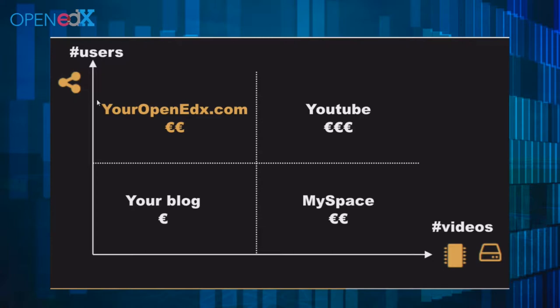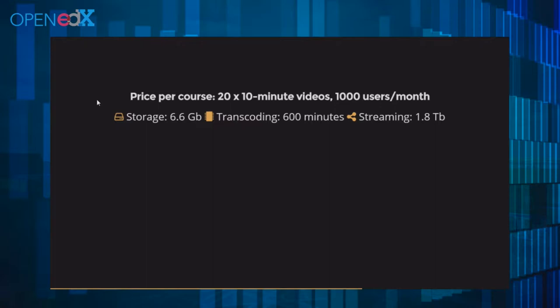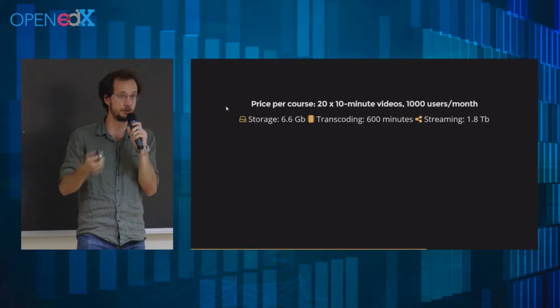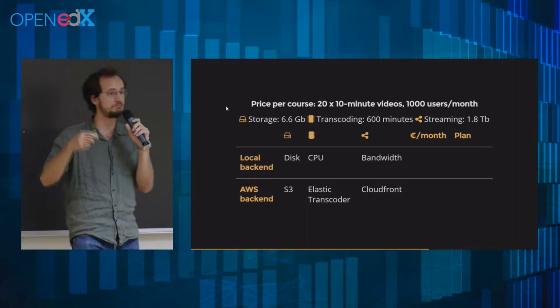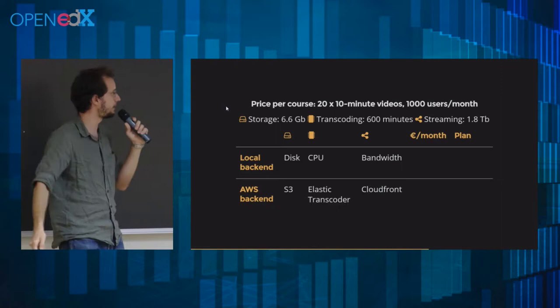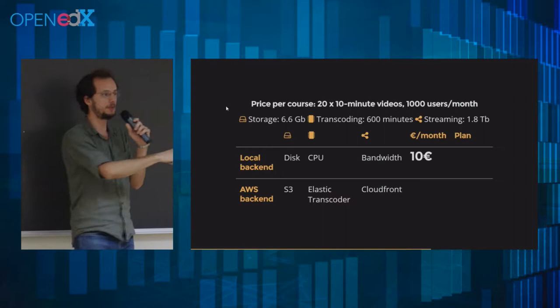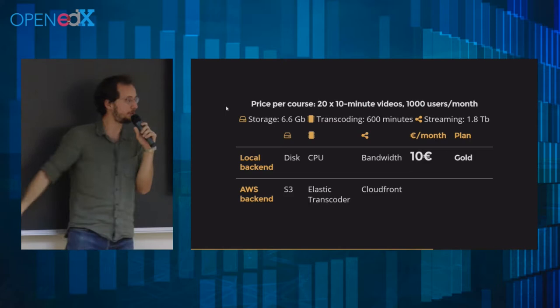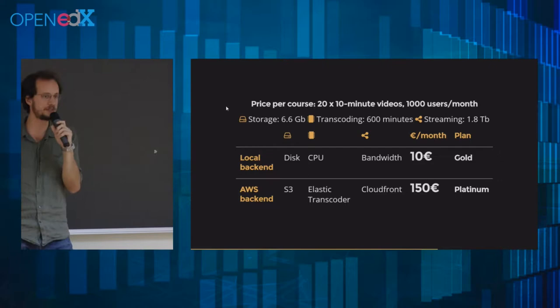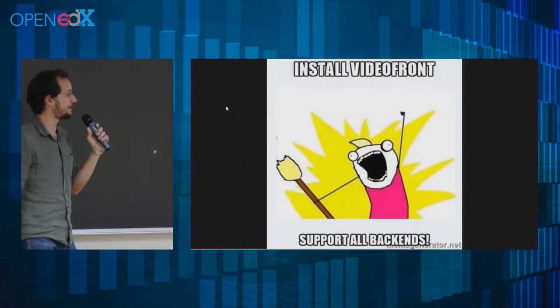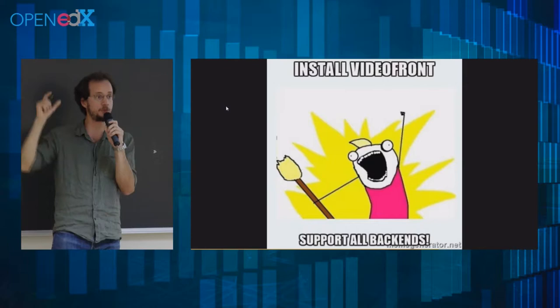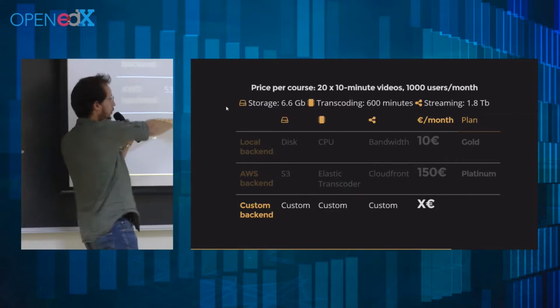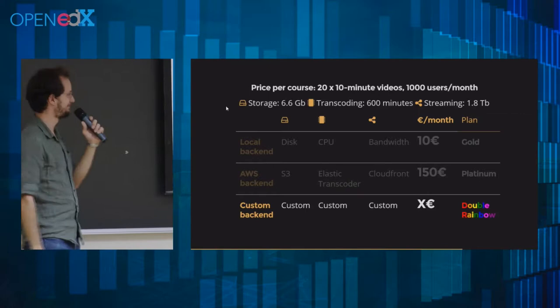Let's break this down into numbers. Say you have a course with 20 ten-minute videos, and a thousand users viewing all videos every month. You can use two different backends: store everything on your own servers — the local backend — which costs about 10 euros per month per thousand users. I call that the gold plan. Or use AWS with all their services — the platinum backend. VideoFront supports both, and was actually developed so you can create your own custom backend, combining the best of both worlds. I call that the double rainbow plan.